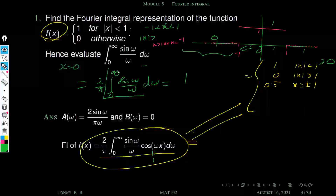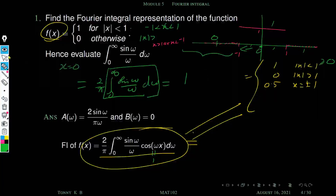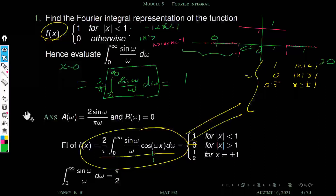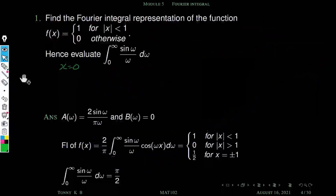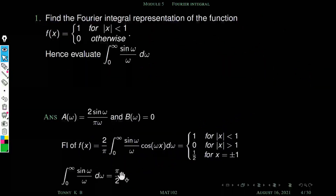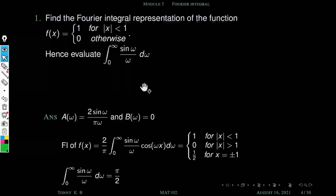So we have (2/π) ∫₀^∞ sin(ω)/ω dω = 1, which gives ∫₀^∞ sin(ω)/ω dω = π/2. This is one application of the Fourier integral.